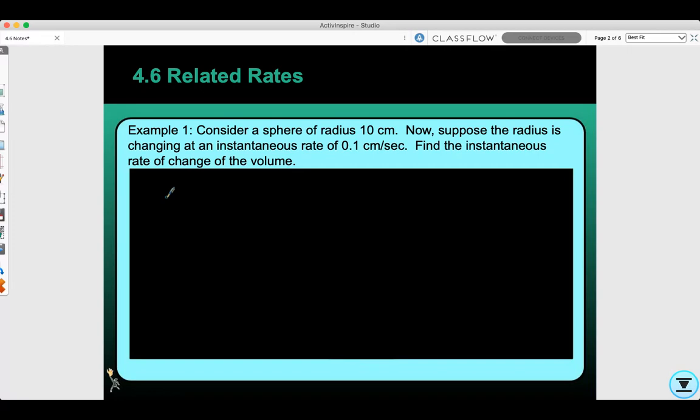This is finding the rate of change in terms of time. They tell us when r equals 10, the radius is changing at a rate of 0.1 centimeters per second, and they want us to find how the volume is changing at that instant. First, we need the volume equation for a sphere: V equals four-thirds π r cubed.